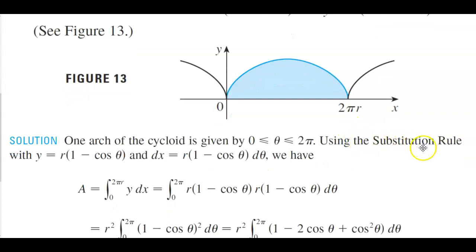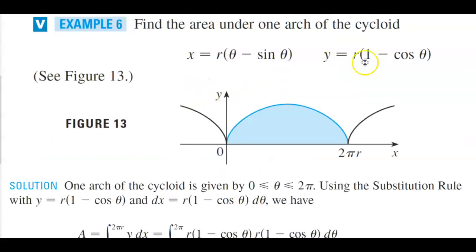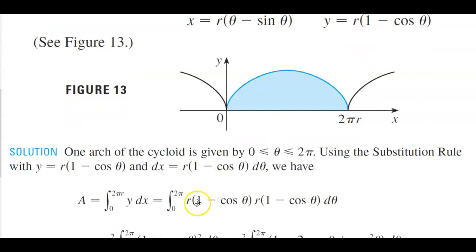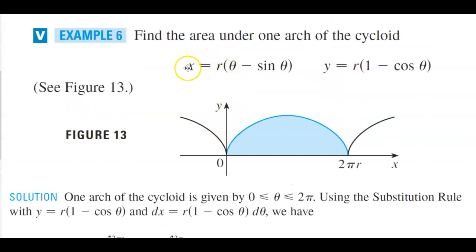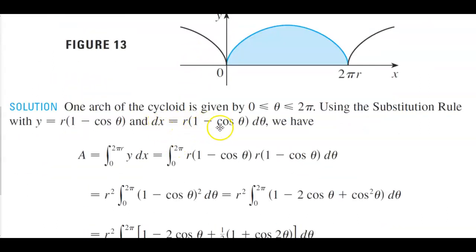Using the substitution rule with y = r(1 minus cos theta) and dx = r(1 minus cos theta) d theta, the area goes from zero to two pi: the integral of y dx. The first function g(t) is r(1 minus cos theta), and f prime of t gives dx = r(1 minus cos theta) d theta. So we have r(1 minus cos theta) times r(1 minus cos theta) d theta.